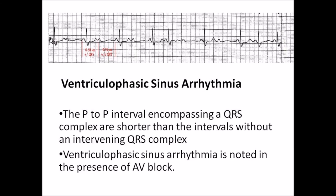For ventriculophasic sinus arrhythmia, the P-to-P interval encompassing a QRS complex is shorter than the intervals without an intervening QRS complex. Ventriculophasic sinus arrhythmia is noted in the presence of an AV block. In this example, upright P waves are seen in lead 2, the atrial rate is about 88 beats per minute, with second degree AV block type 2 (Mobitz 2) manifesting as 2-to-1 and 3-to-2 AV conduction. The P-to-P interval encompassing a QRS is shorter — 0.68 seconds versus 0.76 seconds — compared to that without an intervening QRS.